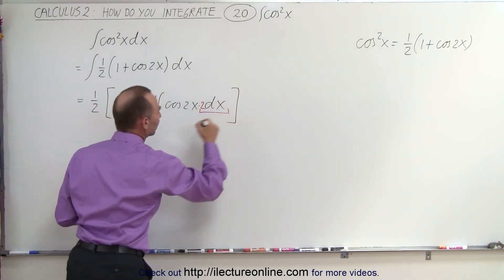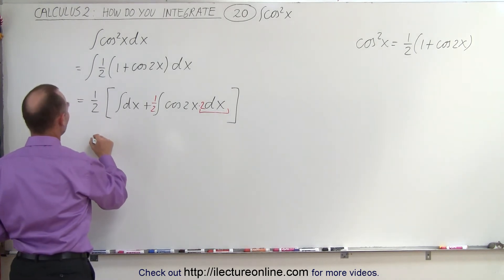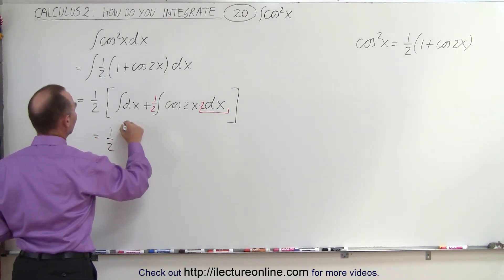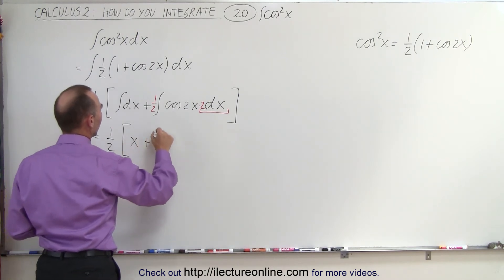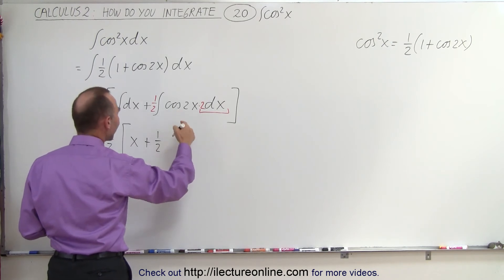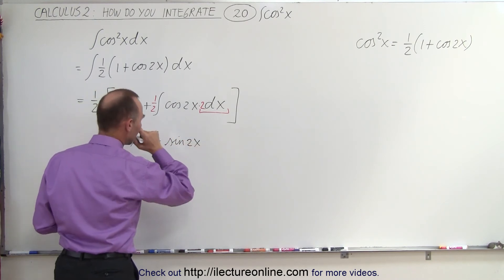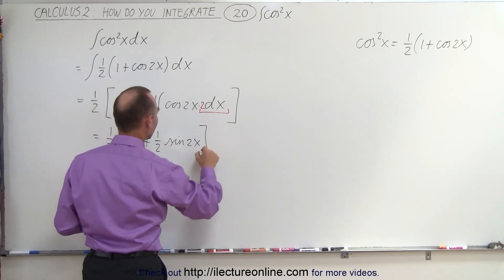And let's close the bracket. There. Now we're ready to integrate both of these integrals. This becomes equal to one-half times the first integral is simply x plus one-half times the integral of the cosine would be the sine. And of course, it would be the sine of two x. So one-half times the sine of two x plus we need a constant of integration.